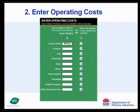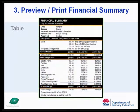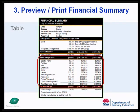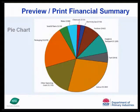In enter operating costs, there are ten operating cost categories, from seeds and plants through to freight and transport and other operating costs. The financial summary displays information about the crop, the income, the operating costs, and the gross margin per hectare, per area unit and per megalitre. The financial summary can also be viewed as a pie chart graph, where the operating costs are compared to each other.